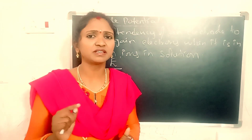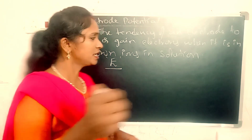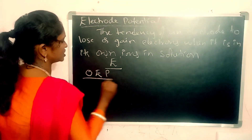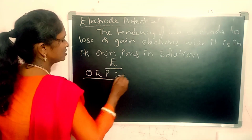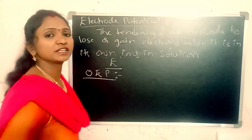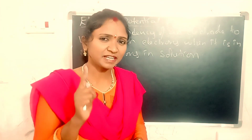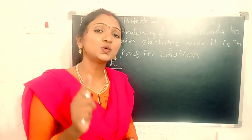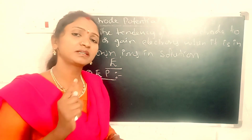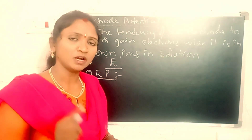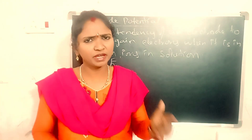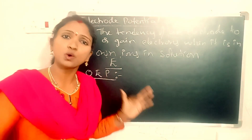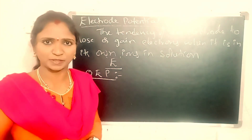There are two types: reduction electrode potential and oxidation electrode potential. What is meant by oxidation electrode potential? Oxidation electrode potential means the tendency of an electrode to lose electrons.